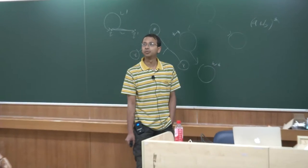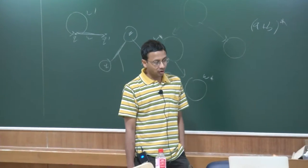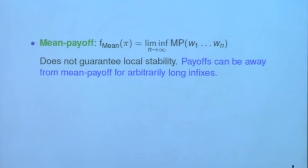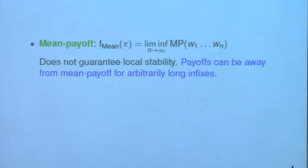I am going to talk about expected window min payoff, this is joint work with Benjama Bordet and Joffre Svaraska. I start with the notion of classical min payoff: given an infinite sequence of values, we define the min payoff over this infinite sequence as the limit over n of a sequence of n values as n tends to infinity. The problem that min payoff suffers from is that it does not guarantee local stability.